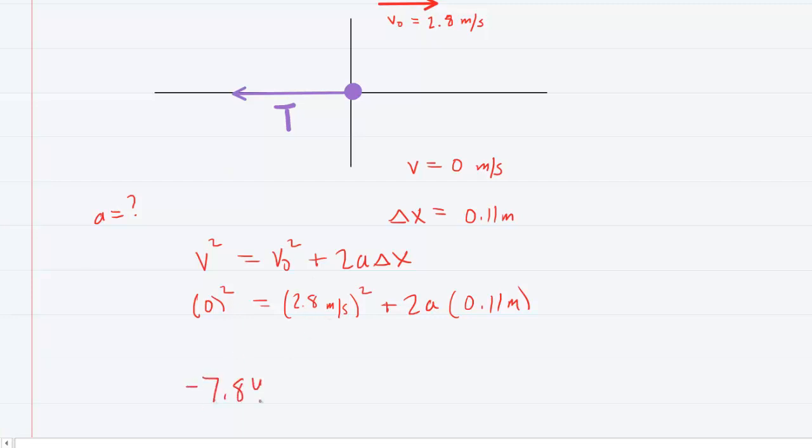So you'll have negative 7.84 meters squared per second squared is equal to, and then two times the 0.11 would give us 0.22 meters.